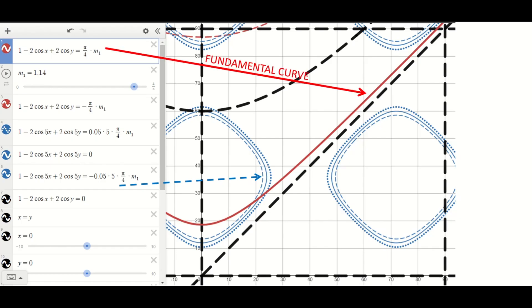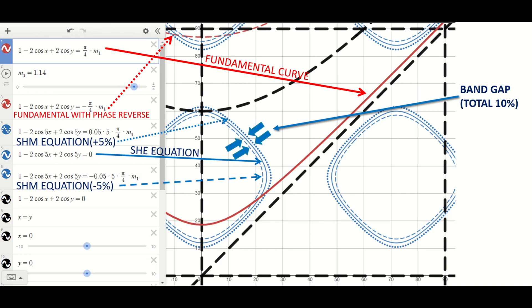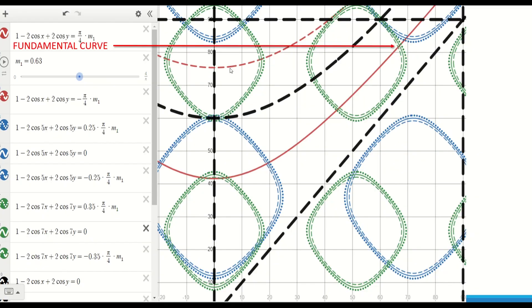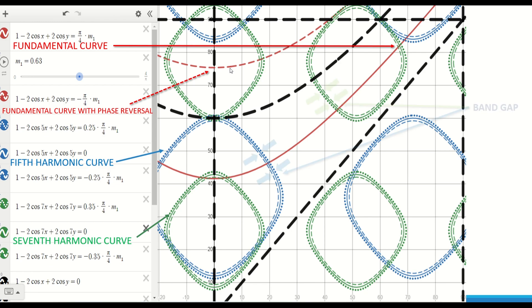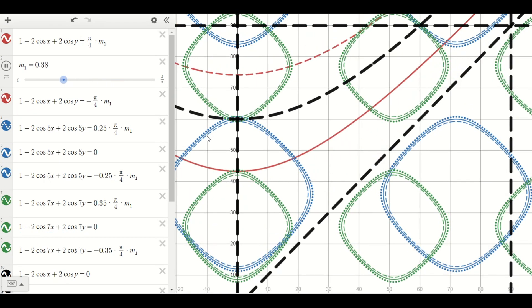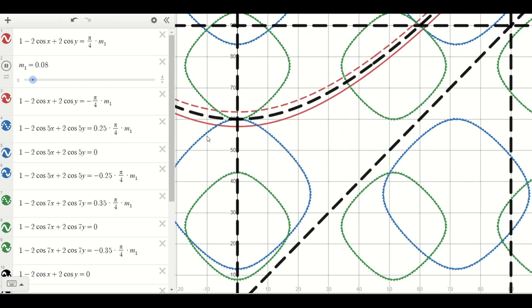As there are more degrees of freedom, showing the SHM equations on a graph provides various benefits, including more solutions and a higher fundamental voltage. Take note that there is a correlation between the band gap and the modulation index.